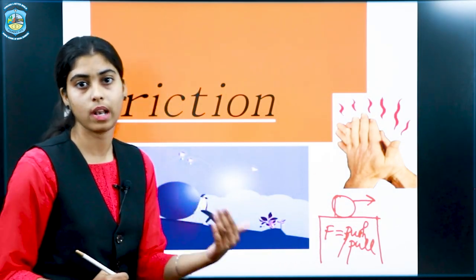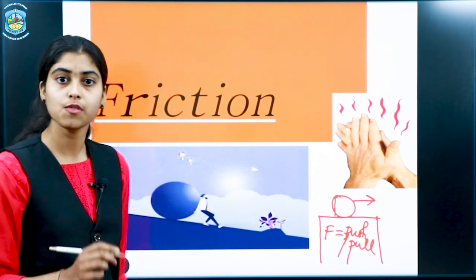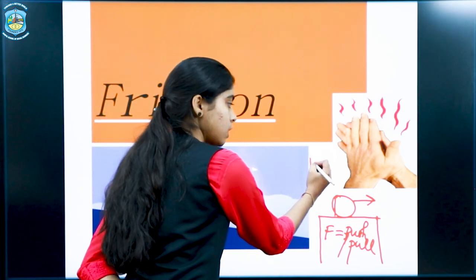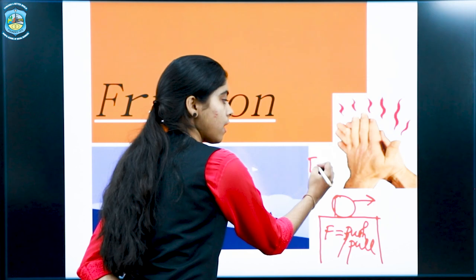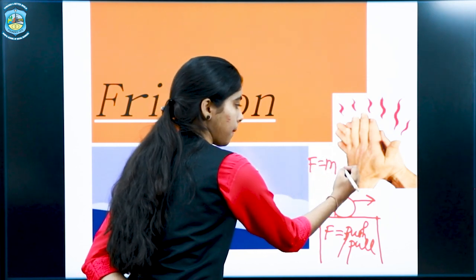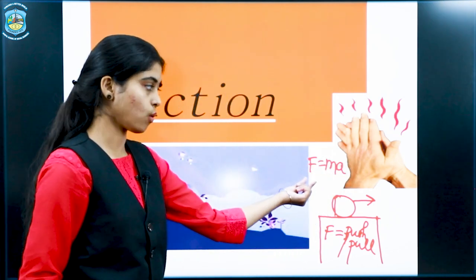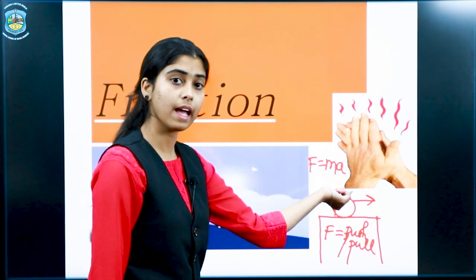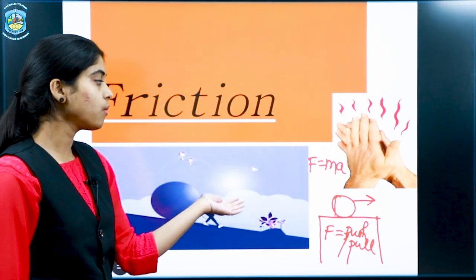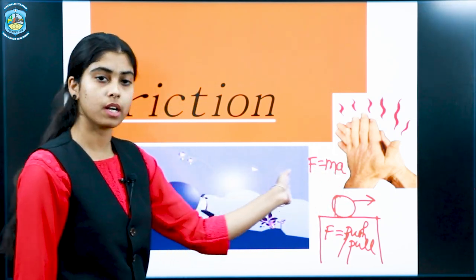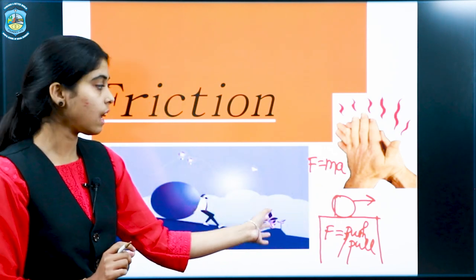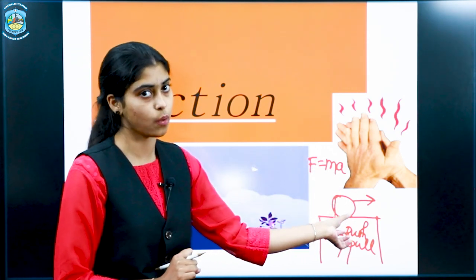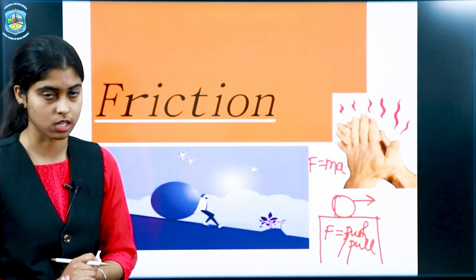Displacement means change in velocity. As we all know from the formula given by Sir Isaac Newton, F equals MA, where F is the force, M is the mass, and A is the acceleration. So when we want to displace a particular object, mass is needed and acceleration — the change in velocity — is required. That is why force is a vector quantity.